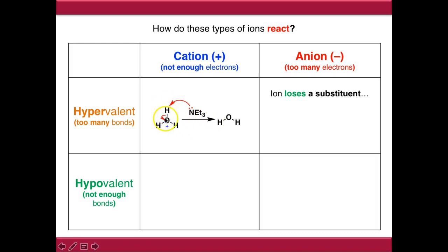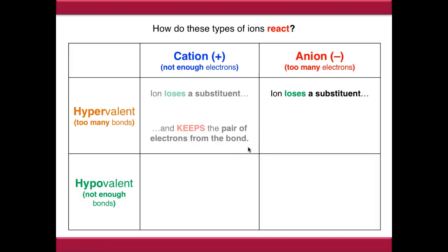Therefore, we've broken the O-H bond and oxygen has kept the electrons, which has satisfied the lack of electron density. And as a result, we've created triethyl ammonium. In the case of the anion, we need to lose the pair of electrons from the bond - we need to push the substituent away along with the pair of electrons in that bond.